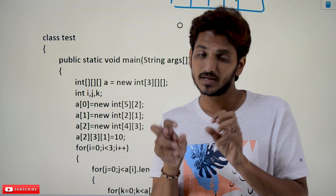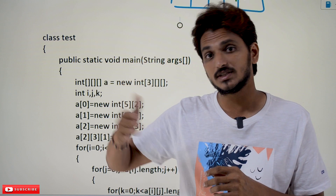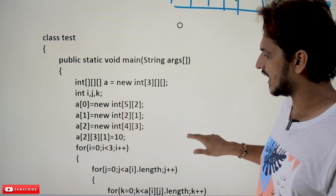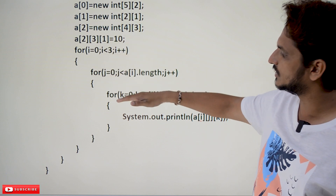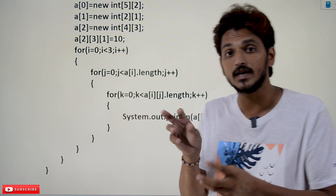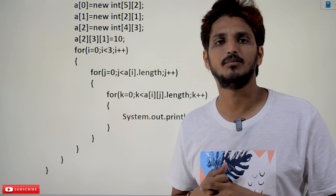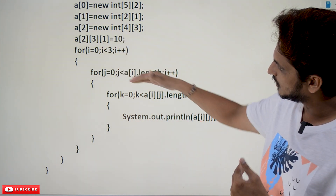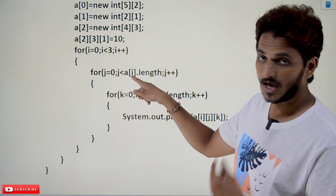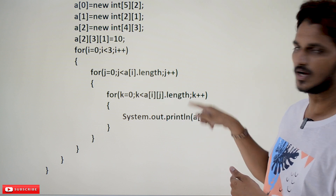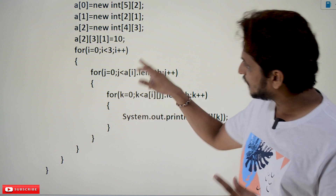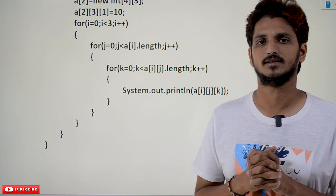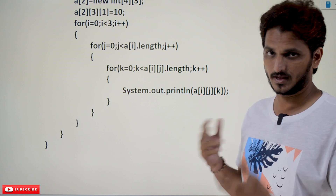If you want to access all the elements in a three-dimensional array, we need three loops — a loop within a loop within a loop. Since we are using variable length, we get the length using the length attribute. In the code, the outer loop uses A.length, the middle loop uses A[i].length, and the inner loop uses A[i][j].length. Try to elaborate this code and apply it to the memory locations — that is the best practice to understand three-dimensional array access, and we are leaving it as an assignment.